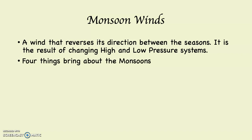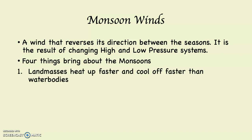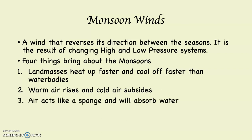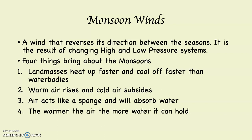Four things bring about the monsoons. Number one: land masses heat up faster and cool off faster than water bodies — basically the continental versus maritime influence. Number two: warm air rises and cold air subsides. Number three: air acts like a sponge — when given the opportunity to absorb water, the air will absorb water. And number four: the warmer the air, the more water it can hold. We're connecting dots here.